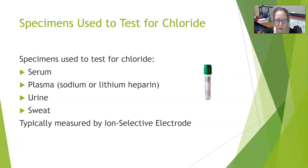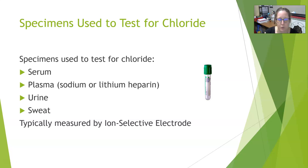Specimens used to test for chloride include serum in a red top tube and plasma — typically lithium heparin — since if you want to test chloride you usually also want to test sodium, and you cannot do that on a sodium heparin tube. Urine can also be tested. Sweat can be tested using the sweat chloride test, which was historically used to screen for cystic fibrosis, but it is now an outdated test because we have accurate and fast genetic testing that is used to screen for cystic fibrosis instead.